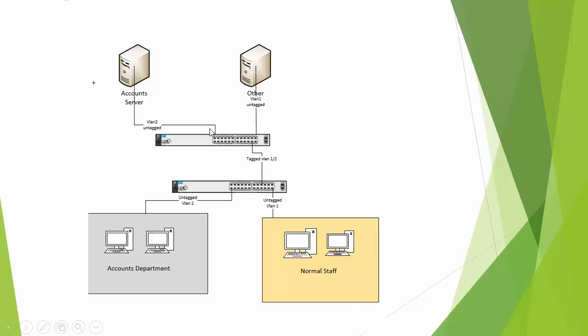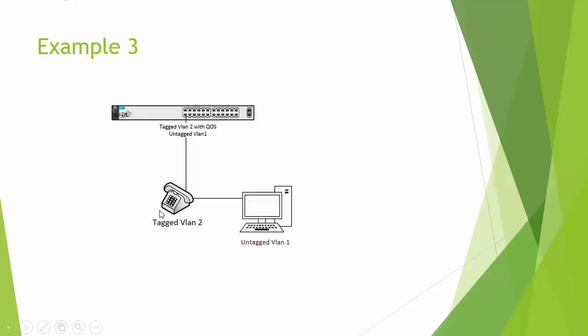Final visual — the trunked setup. Accounts are on untagged VLAN 1 with no configuration needed. Normal staff are on untagged VLAN 1 as well. All the information is sent up to the core switch, so the trunk has to be tagged for both VLAN 1 and VLAN 2 because we're putting both sets of information along the one path. The uplink port is tagged 1 and 2. The ports downstream can then be configured as untagged VLAN 2 for accounts and untagged VLAN 1 for normal staff — no configuration needed on any of those computers.